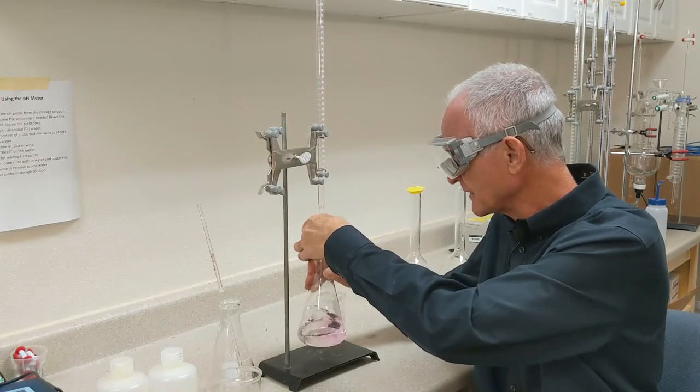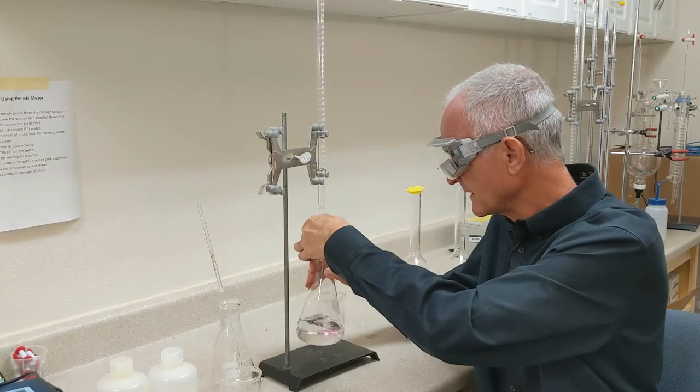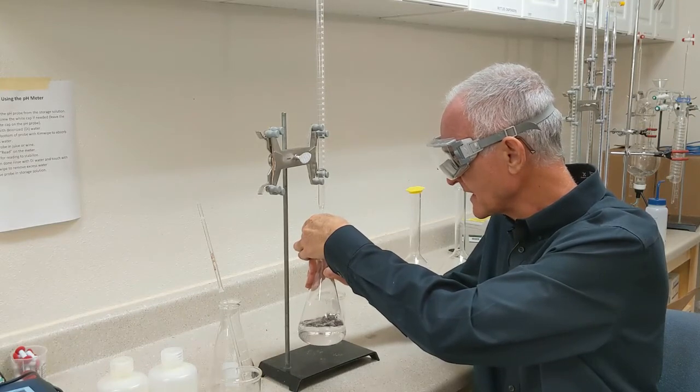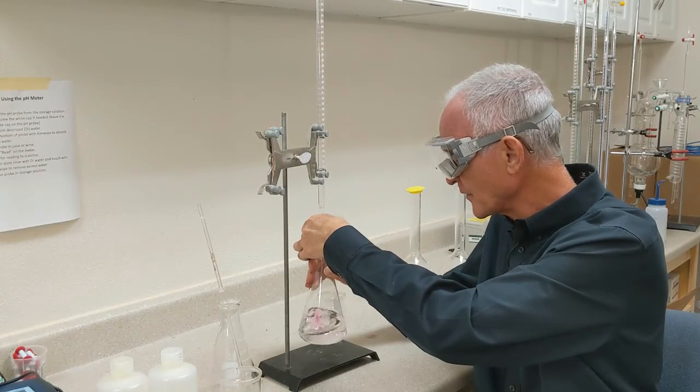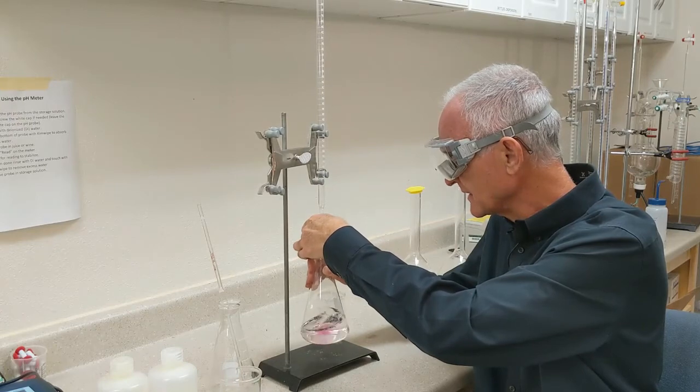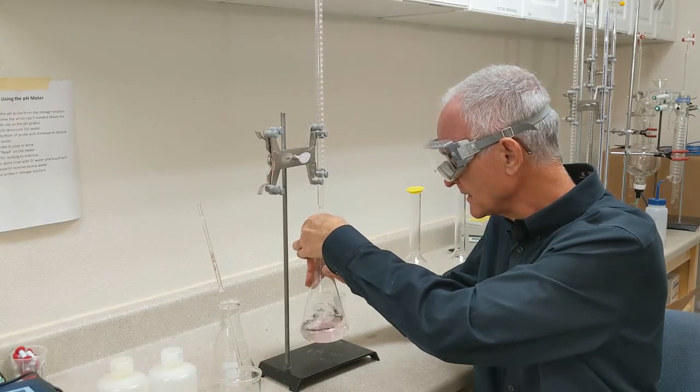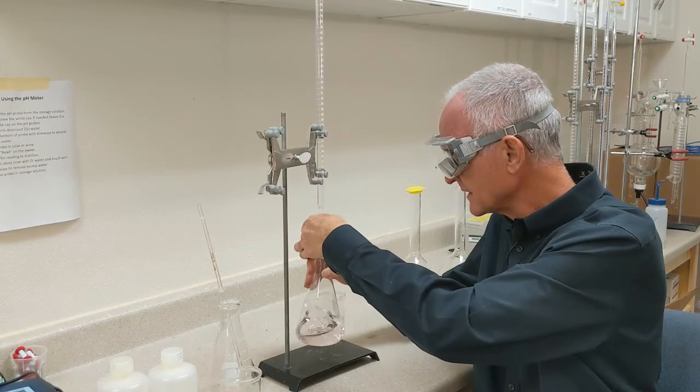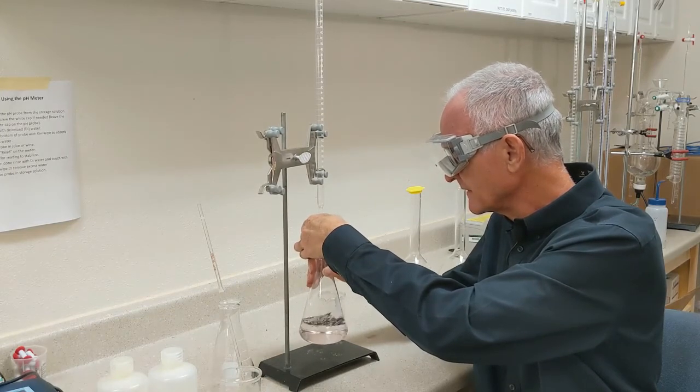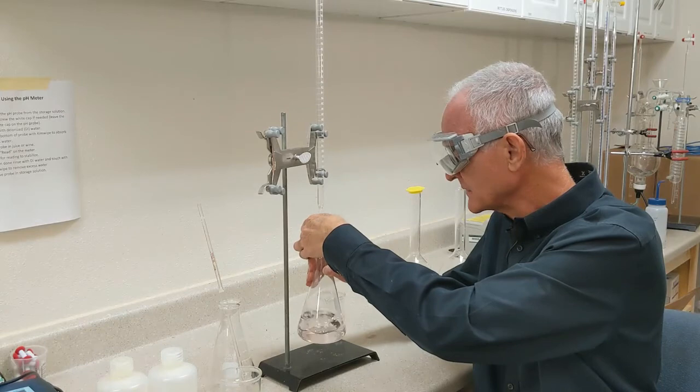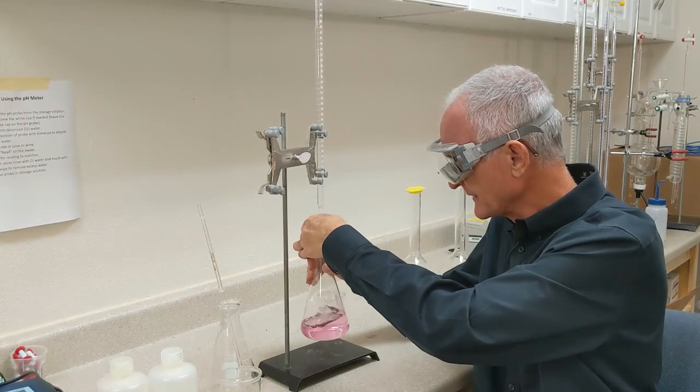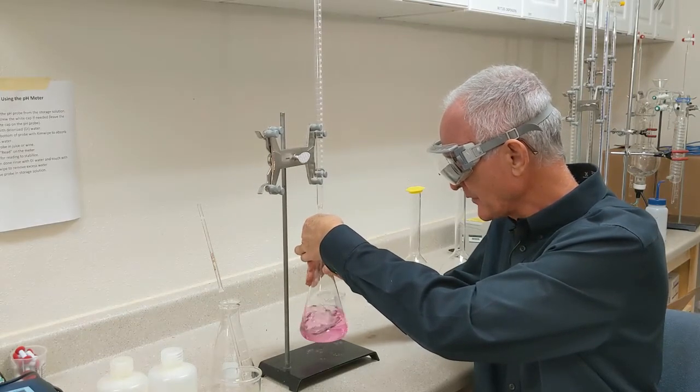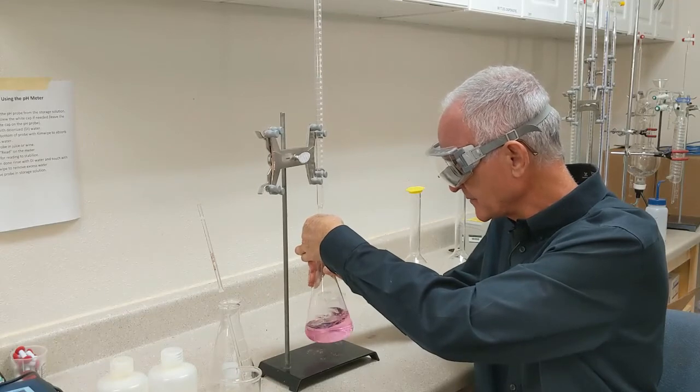I'm going to slow down the drip so that I can try and stop it right at the endpoint when I have a pale pink that persists. So you can see the pink is starting to remain a little longer. Still not quite staying for long enough. But I'm really close. And I think I'm probably there. Let's see if this persists.